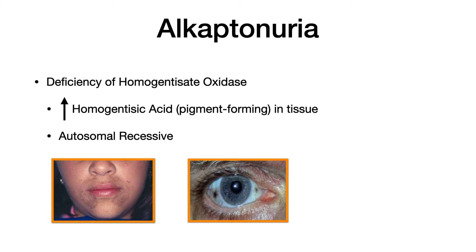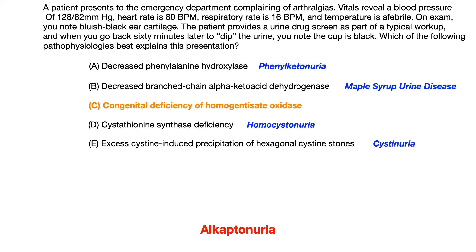Let's go back to the question and see if we could have eliminated other incorrect answer choices. Choice A, decreased phenylalanine hydroxylase — that is phenylketonuria, or PKU. Choice B, decreased branched-chain alpha-ketoacid dehydrogenase — that is the pathophysiology for maple syrup urine disease. Choice D, cystathionine synthase deficiency — that is the pathophysiology behind homocystinuria. And choice E, excess cystine-induced precipitation of hexagonal cystine stones — that's the pathophysiology behind cystinuria.